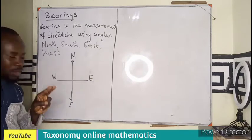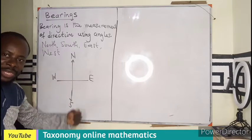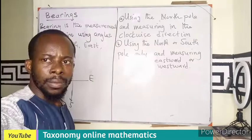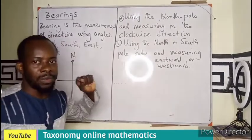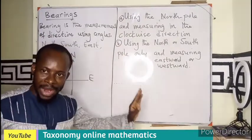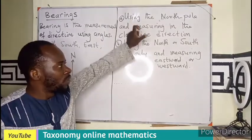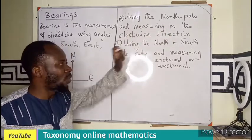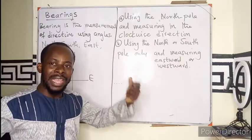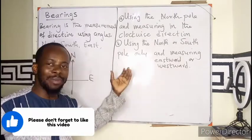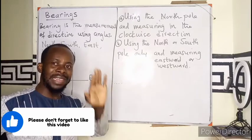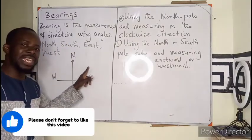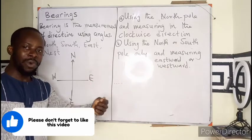We measure in clockwise direction. Then second, we use both the north and the south pole and measure towards the east or towards the west. In bearing measurement we are using two ways: one, using the north pole and measurement is in clockwise direction — that is called the three-figure measurement, meaning your measurement is supposed to be read in three figures. If the number is less than 100, we precede the number with zero. Any angle measured in the first quadrant is going to be preceded by zero.